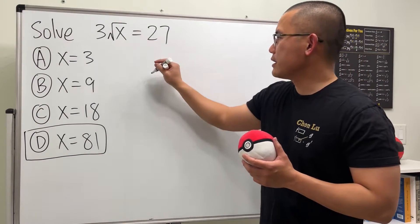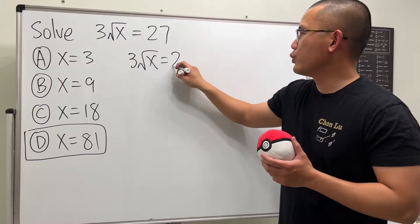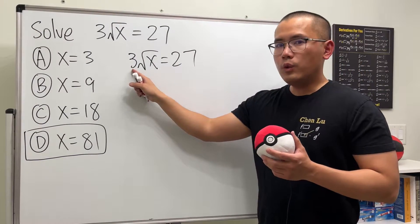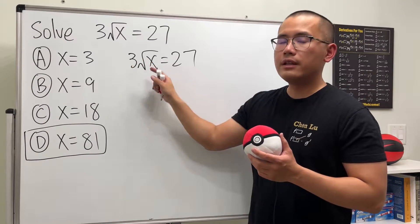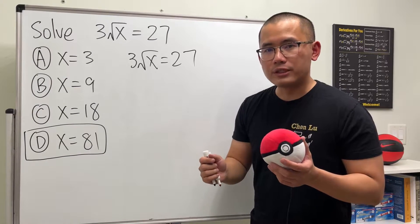So let me write this down again. We have 3 square root of x. This is equal to 27. Well, we have to get rid of the 3 first. And this is 3 times square root of x. We are going to divide both sides by 3 first.